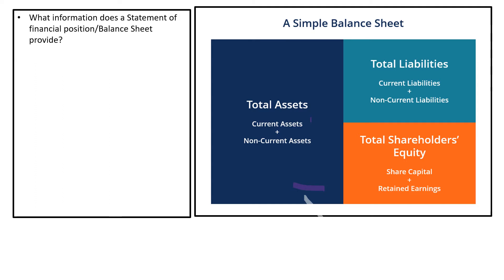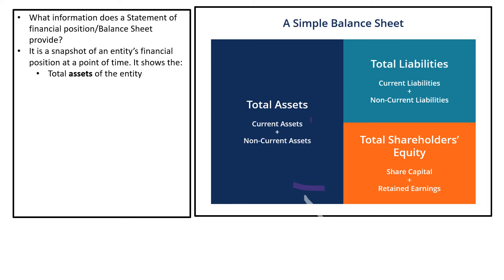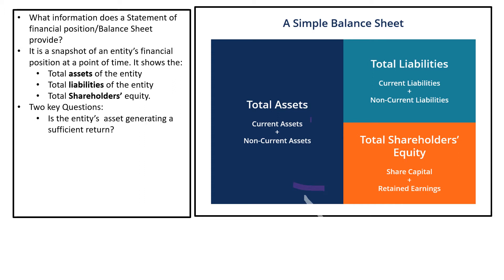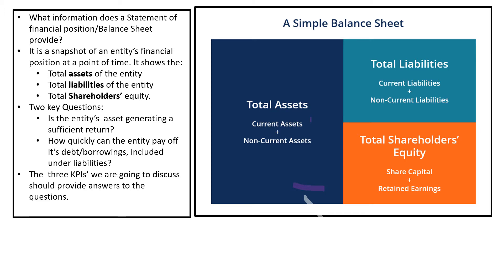In this slide we'll look at the data the statement of financial position or balance sheet provides. It is a snapshot of an entity's financial position at a point in time. It shows the total assets, total liabilities, and total shareholders' equity. There are two key questions: is the entity's assets generating a sufficient return, and how quickly can the entity pay off its debts or borrowings? The three KPIs we are going to discuss should provide answers to these questions.